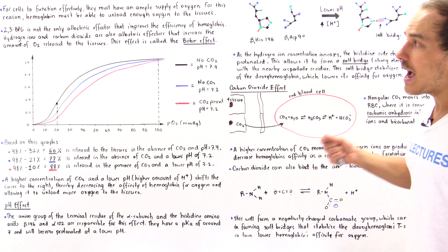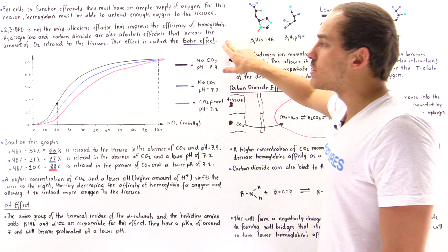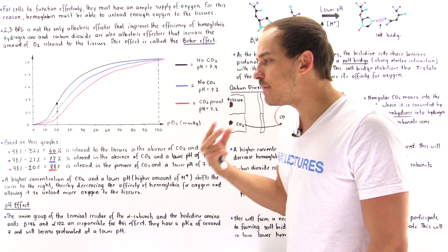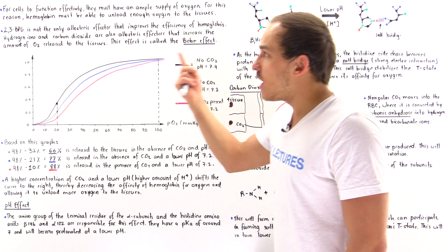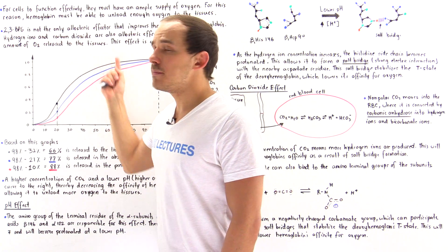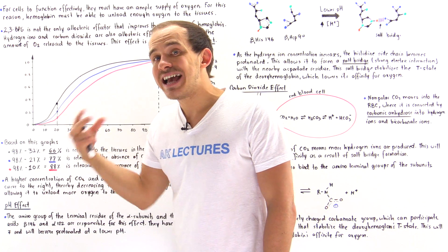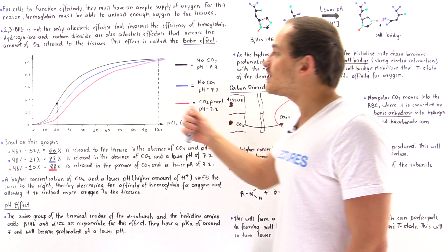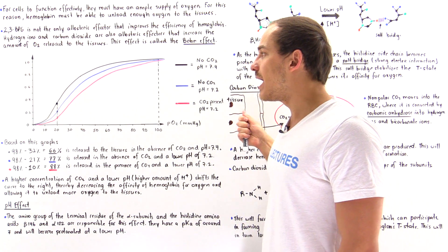So this entire discussion is known as the Bohr effect. So the Bohr effect is the effect that is observed when hydrogen ions and carbon dioxide ions together create the pH effect and the carbon dioxide effect and shift the curve to the right side.